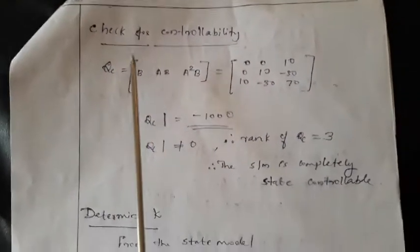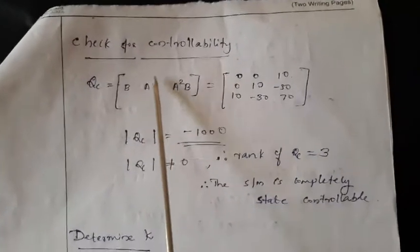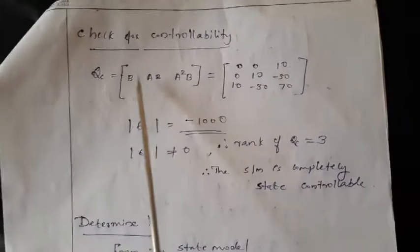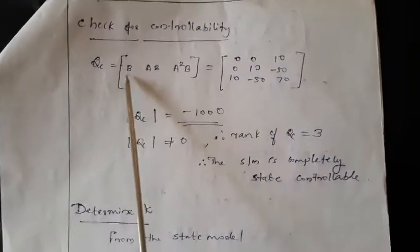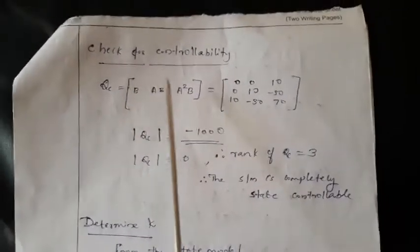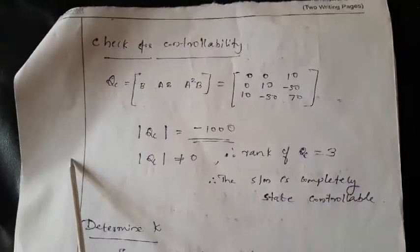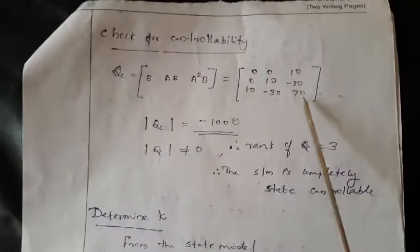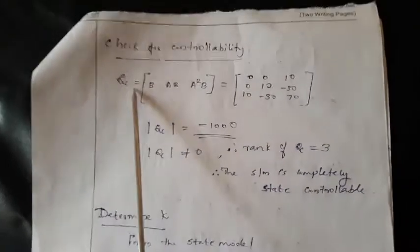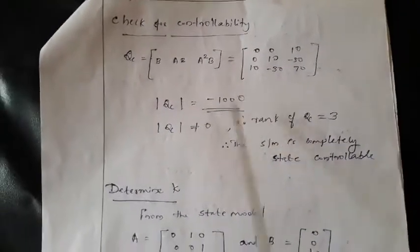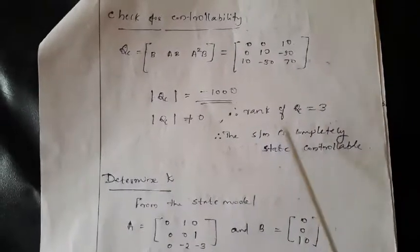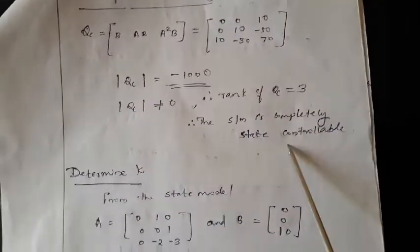One important point: to design a feedback controller, it is necessary and sufficient that the given system be controllable. Only a controllable system can be improved using feedback controllers. So first, determine the state model, then check controllability by forming the composite matrix Qc = [B, AB, A²B] and finding its rank. If rank equals the number of state variables, the system is completely state controllable. In this question, rank is 3 and number of state variables is 3, so the system is completely state controllable.